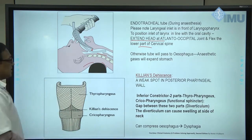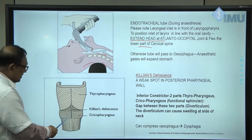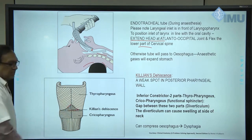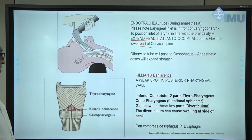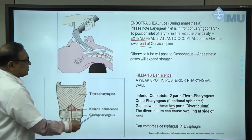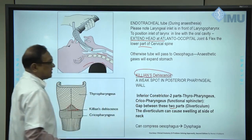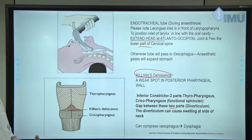Between the thyreopharyngeus and cricopharyngeus parts of the inferior constrictor, there is a gap called Killian's dehiscence. This gap can produce difficulty in swallowing because a diverticulum or sac may form there. Killian's dehiscence is particularly present in elderly people and can produce a diverticulum causing dysphagia.